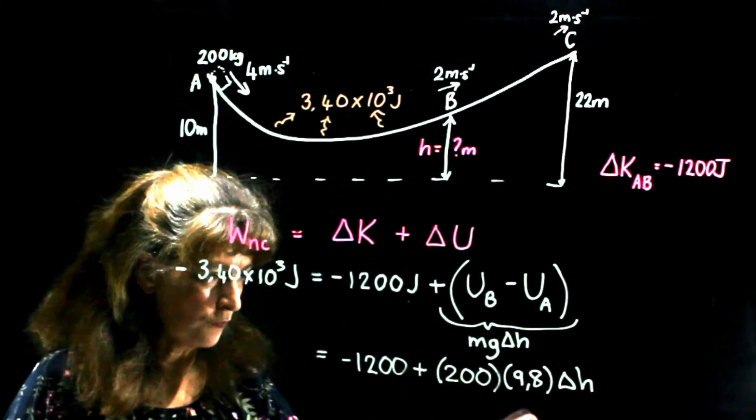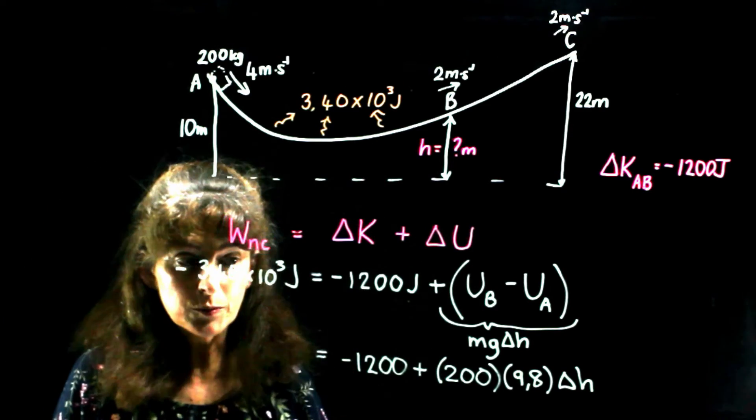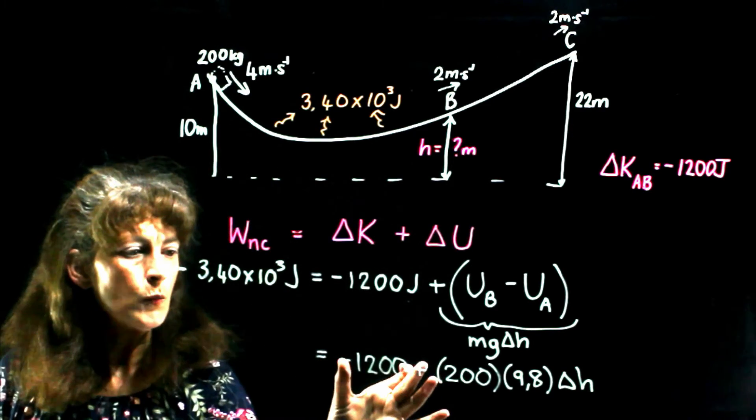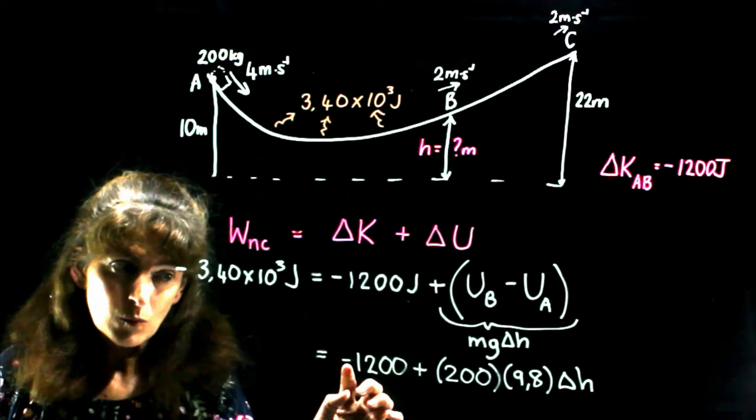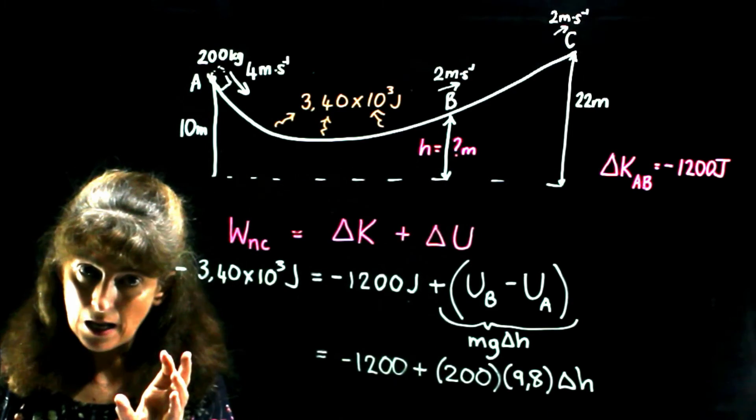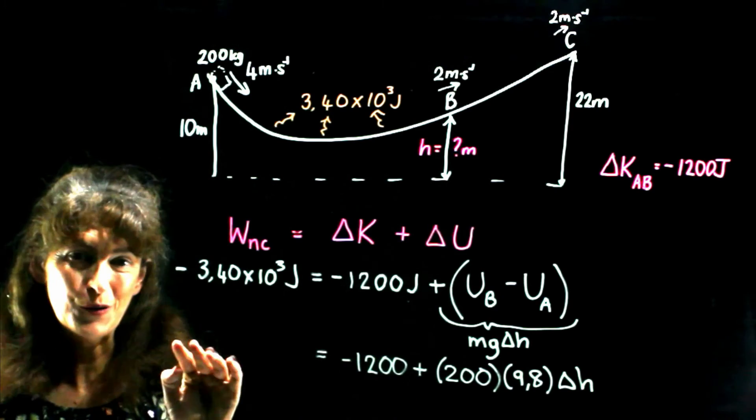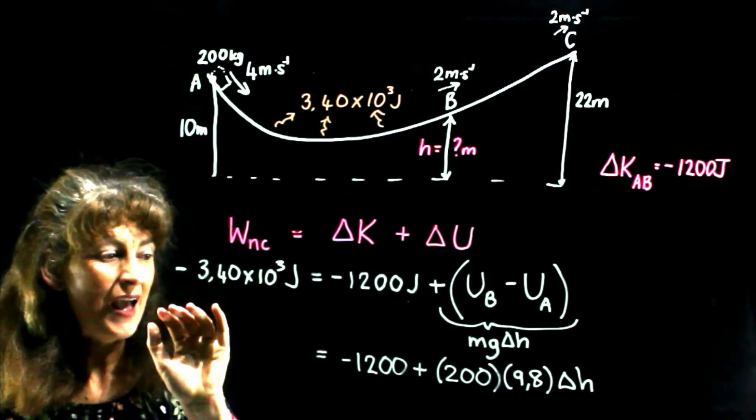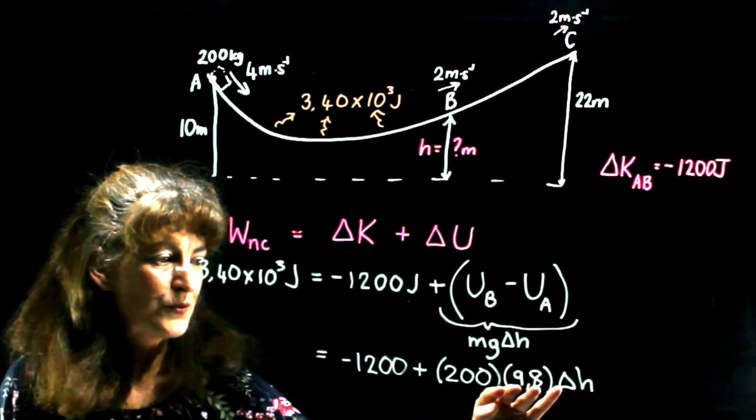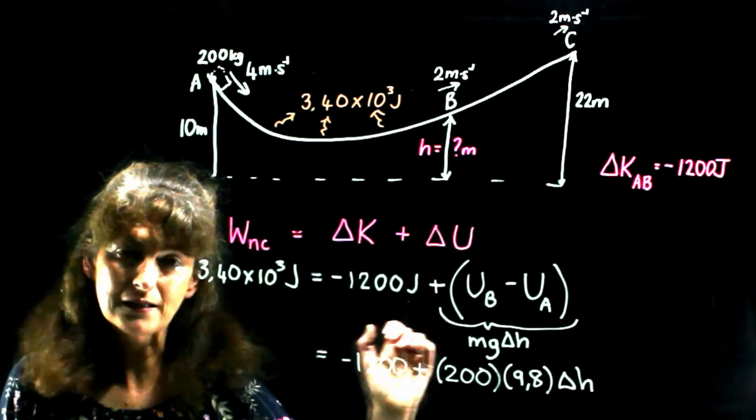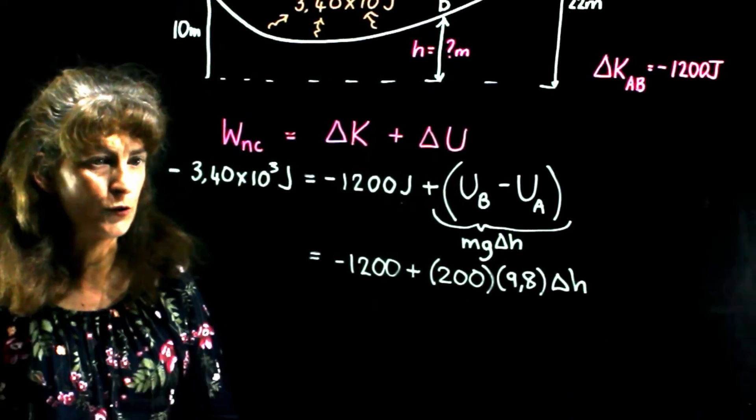So that's equal to minus 1,200 joules plus 200 times 9.8 delta H. So now we need to solve for delta H. So we must get our algebra right. What are we going to do? We're going to add 1,200 to both sides, which in effect looks like taking this one across and changing its sign. And then we're going to divide both sides by this so that delta H is on its own. Let's do all that.